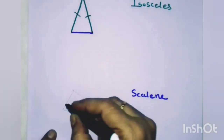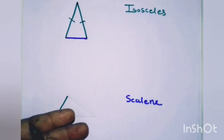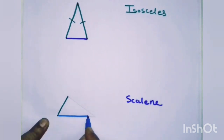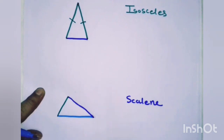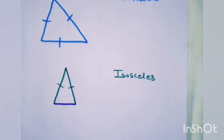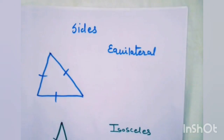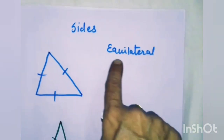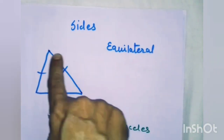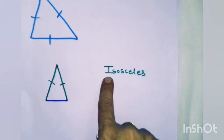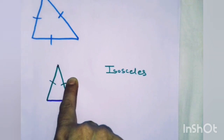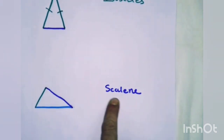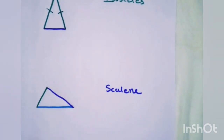No 2 sides are equal means the measures of all 3 sides are different; they are not the same. So these are the 3 types of triangle on the basis of sides. The first one is equilateral triangle — all 3 sides are equal in measure. In an isosceles triangle, 2 sides are of equal length. And in a scalene triangle, all 3 sides are of different measure.